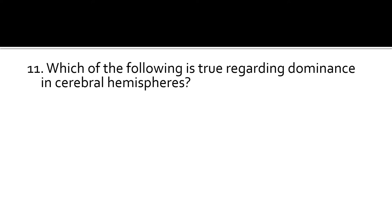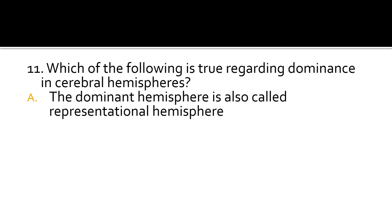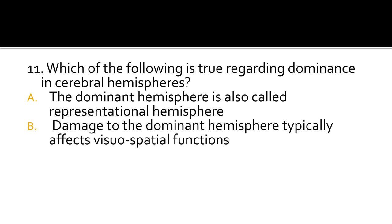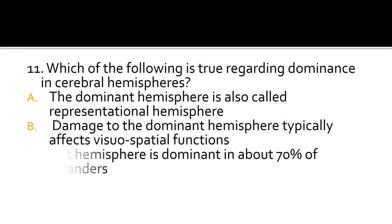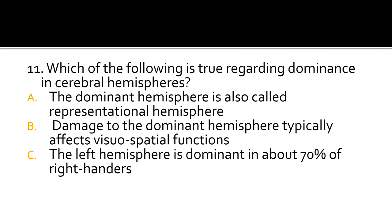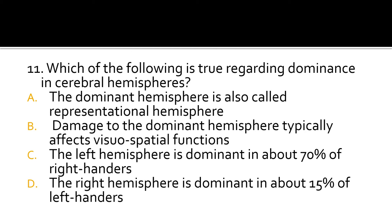Question 11. Which of the following is true regarding dominance in cerebral hemispheres? The dominant hemisphere is also called the representational hemisphere. Damage to the dominant hemisphere typically affects visuospatial functions. The left hemisphere is dominant in about 70% of right-handers. The right hemisphere is dominant in about 15% of left-handers.